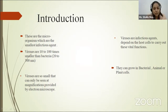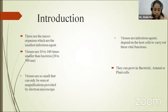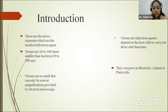Viruses are microorganisms which are the smallest infectious agents. Viruses are 10 to 100 times smaller than bacteria — about 20 to 30 nanometers. The smallest known virus is approximately 0.2 micrometer in diameter and the largest is about 0.8 micrometer in diameter. Viruses are so small that they can only be seen under an electron microscope; we cannot see them with the naked eye.